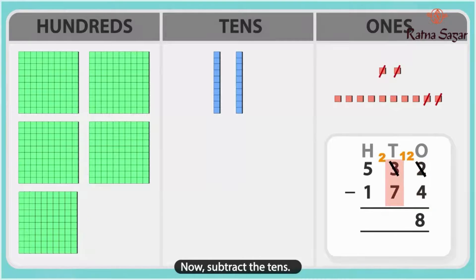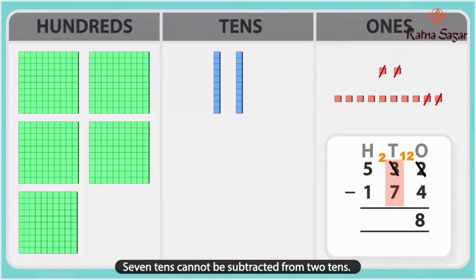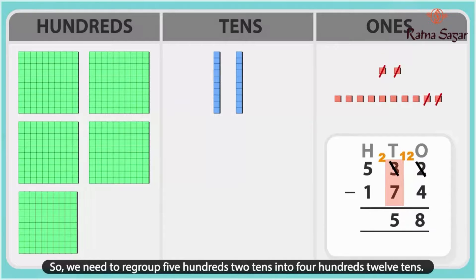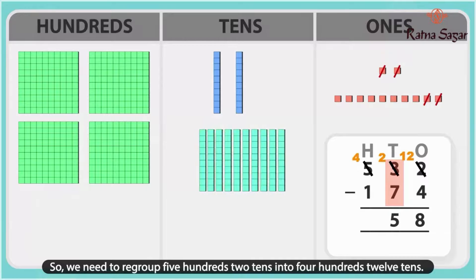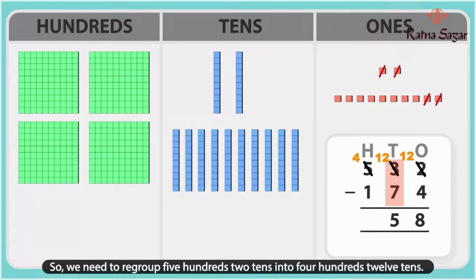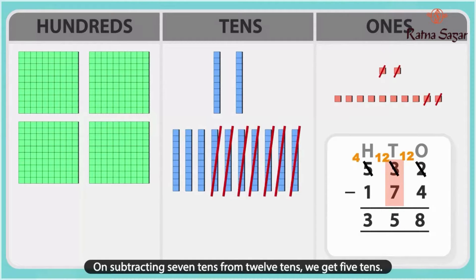Now, subtract the tens. 7 tens cannot be subtracted from 2 tens. So, we need to regroup 5 hundreds 2 tens into 4 hundreds 12 tens. On subtracting 7 tens from 12 tens, we get 5 tens.